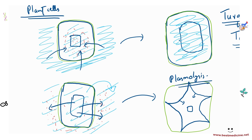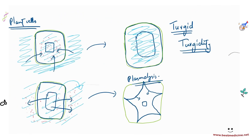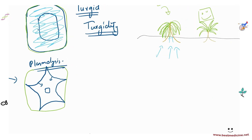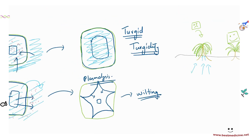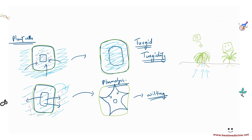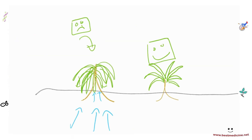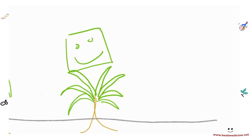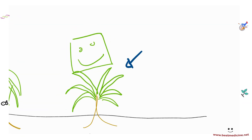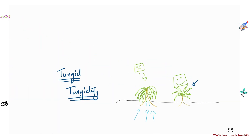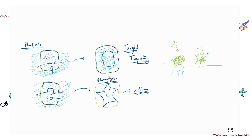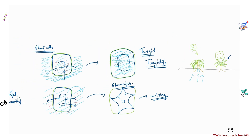This process — where the cell membrane pulls away from the cell wall due to water loss — is called plasmolysis. A plasmolyzed cell is dehydrated and results in wilting. Wilting occurs when plant cells are plasmolyzed, when they lose water, or when they are placed in a very concentrated solution.